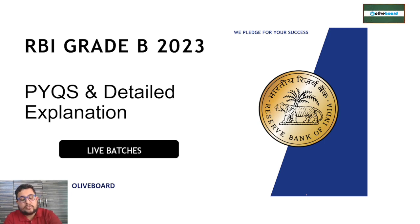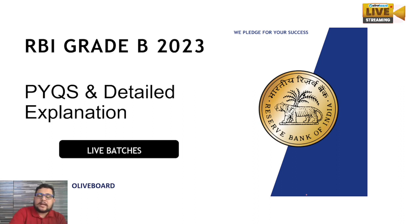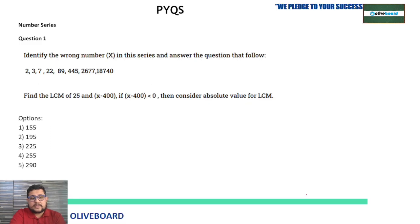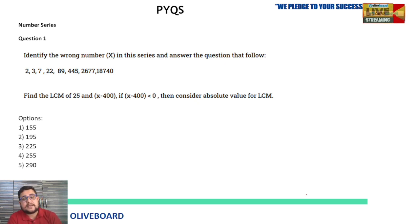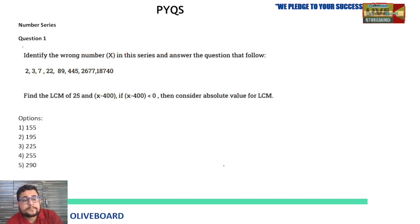You must know the approach to attempt those kinds of questions. This is a new initiative from Olive Board, so do subscribe to our new channel for all regulatory exams. If you haven't downloaded our app yet, then do download it. Let's start with our first question. Today we are going to discuss previous year questions of number series. Our first question: identify the wrong number X in the series.